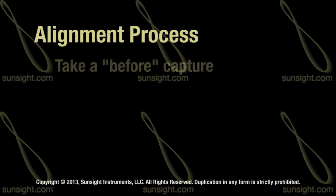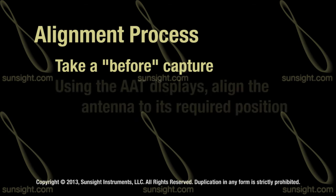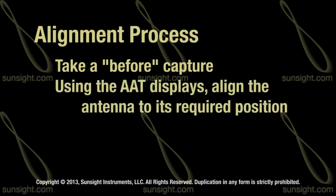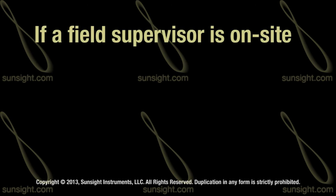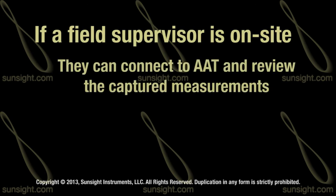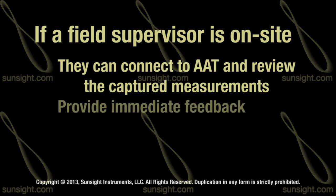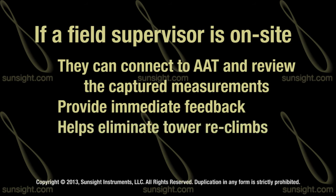At this point, take a capture using the capture button, generating an as-found read of the current antenna alignment. Then make adjustments to properly align the antenna prior to pressing the capture button for the final read. If you are working with a field supervisor, he or she can connect to the AAT to review the capture and ensure proper alignment before you descend the tower. This will allow you to get feedback right away and eliminate the need for reclimbs later.